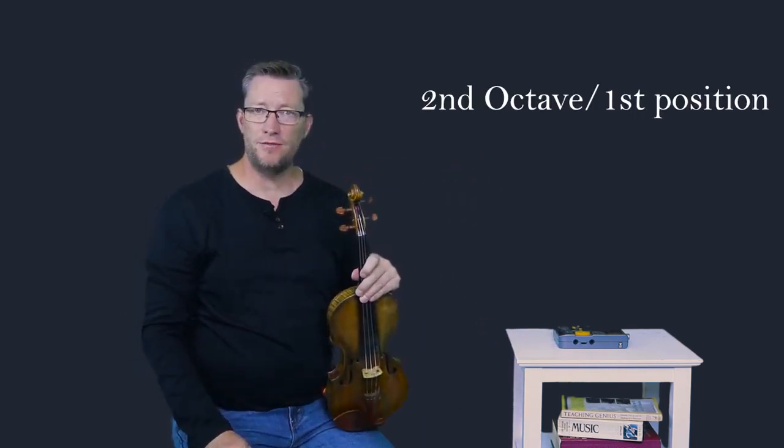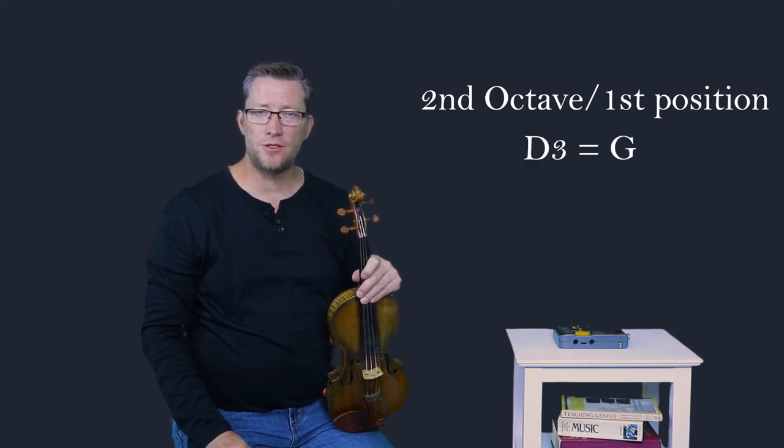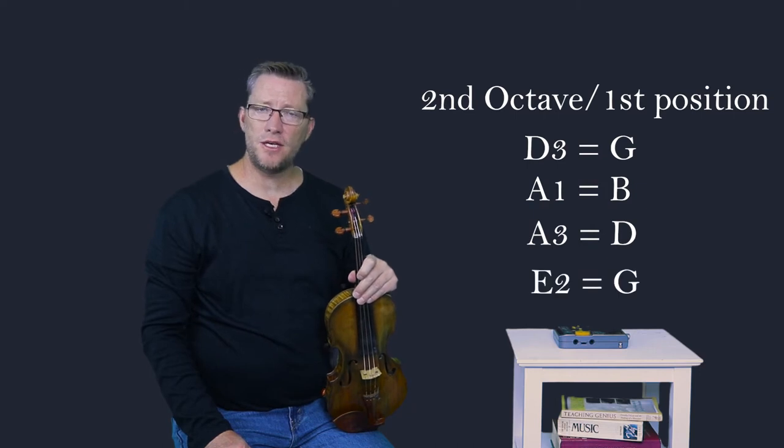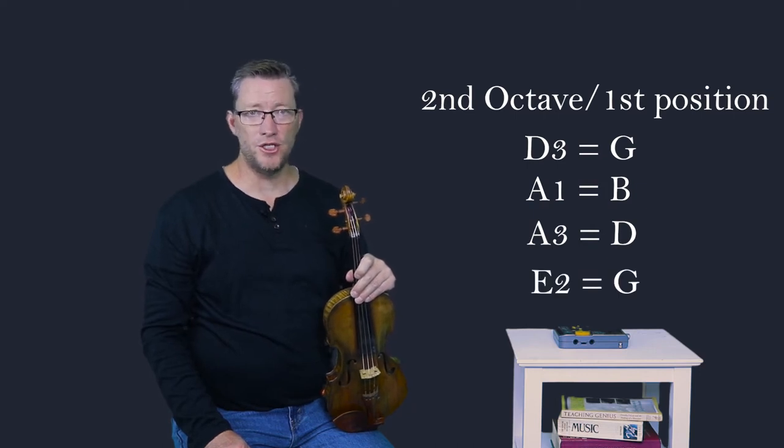The second octave finger pattern stays in first position with the finger pattern: third finger on the D string for the note G, first finger on the A string for the note B, third finger on the A string for the note D, and low second finger on the E string for the note G.